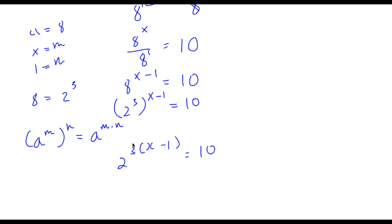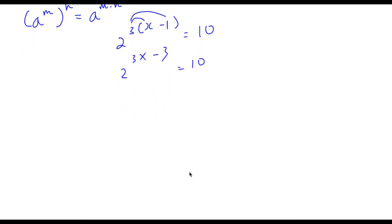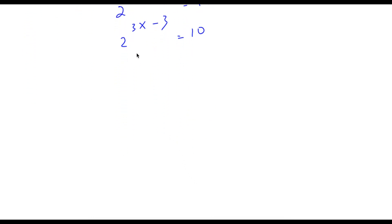Now we have to simplify this, so we're going to distribute the 3. This would be 2 to the power of 3 times x is 3x, minus 3 times 1 is 3. So now we have 2 to the power of 3x minus 3 is equal to 10.